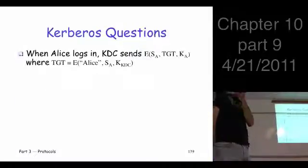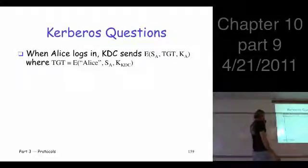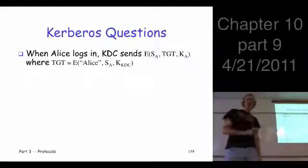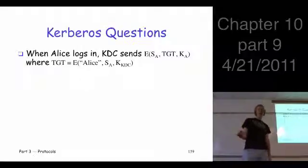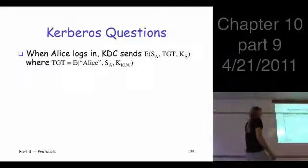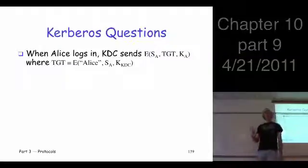Here's some things to think about. So when Alice logs in, the KDC sends this back to Alice. It encrypts the session key S sub A and encrypts the TGT all with the key K sub A. That's fine because Alice can decrypt it and get the important information out. But the question is, look at the TGT. Now, it's encrypted with a key that's only known to the KDC.